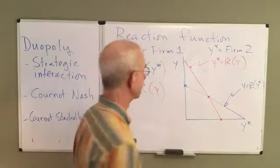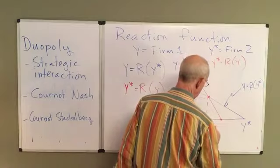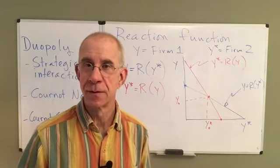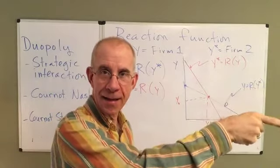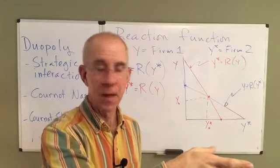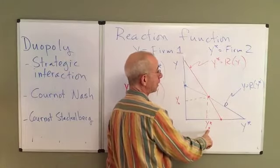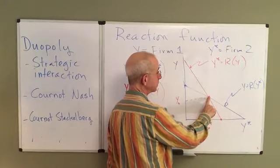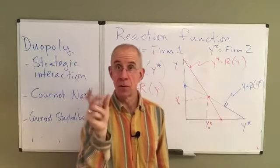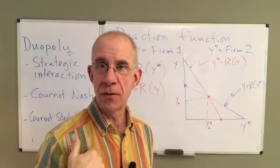The intersection is the combination of output for the two firms such that what I think the other firm is going to do matches what they actually do, and what they think I'm going to do matches what I do. If firm two chooses this level of output, we go up to the blue line to find firm one's reaction. If firm one does this, you go back over and down — they are mutually consistent. That's the Nash equilibrium: given what one firm does, the other is optimizing, and vice versa.